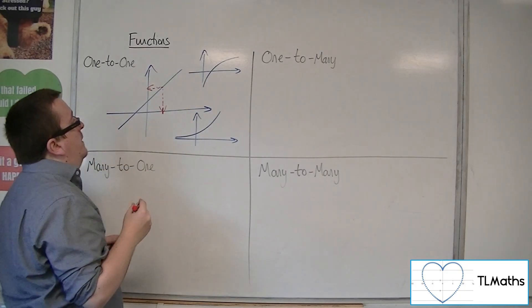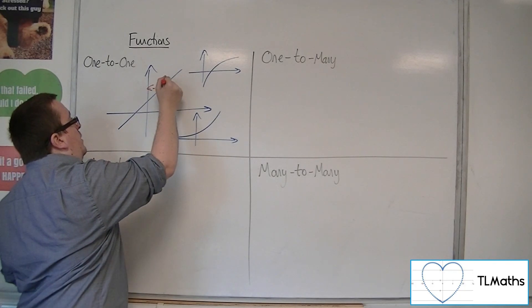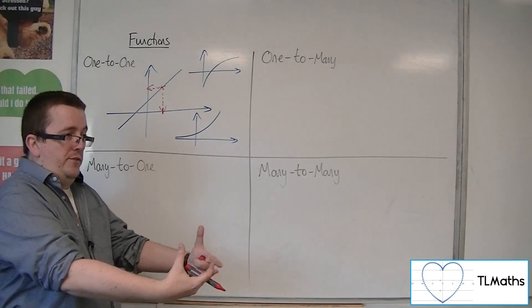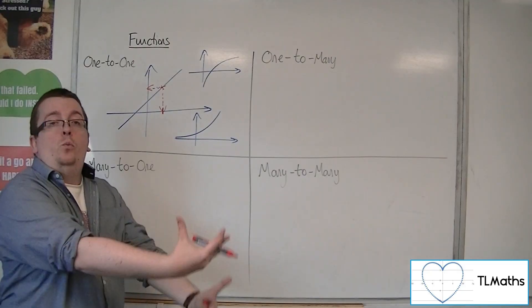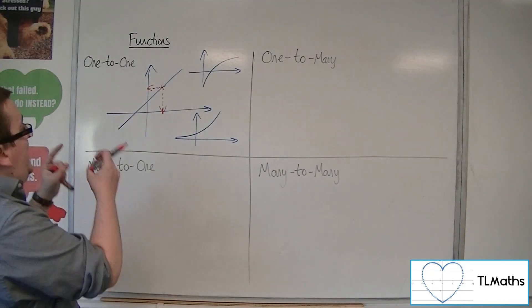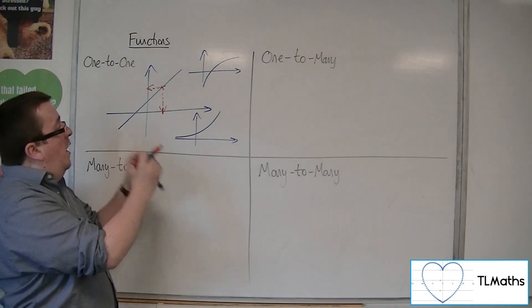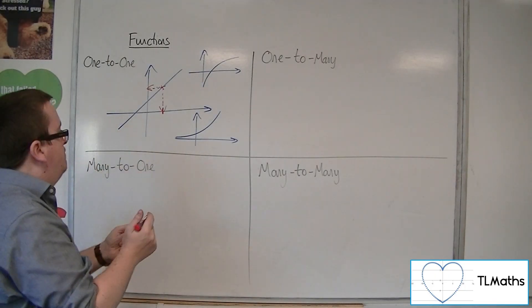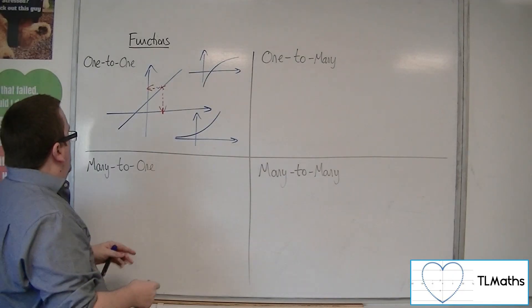There is not a case of there being two values of x that would give you one value of y. Each value of x has one corresponding value of y and one only.